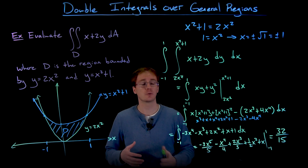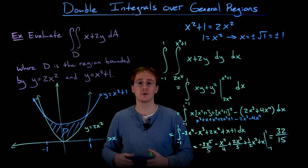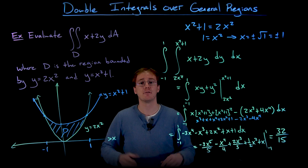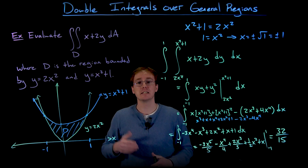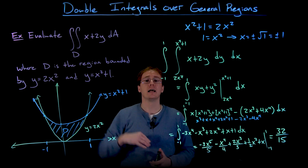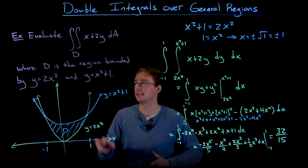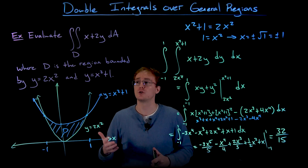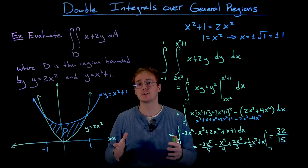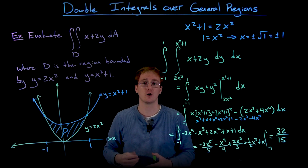We weren't asked to interpret 32 over 15 geometrically, but if we did, we can think of it as a volume. The graph of z equals x plus 2y in three-dimensional space gives a tilted plane, and our double integral represents the volume underneath this tilted plane over the region d bounded by y equals 2x squared and y equals x squared plus 1.